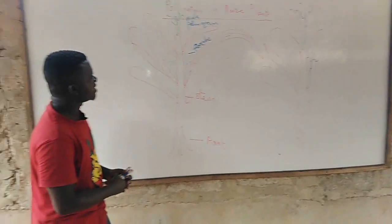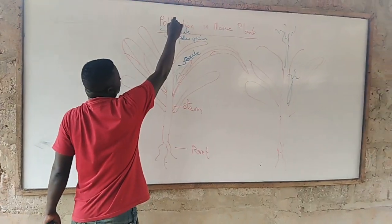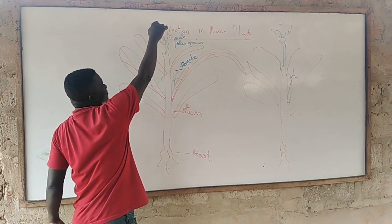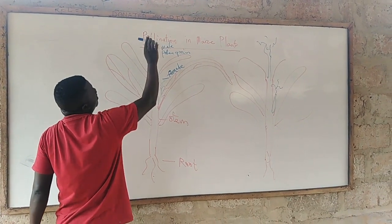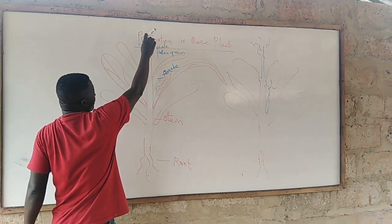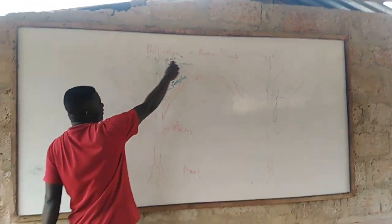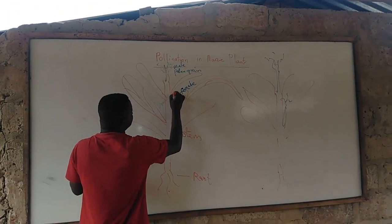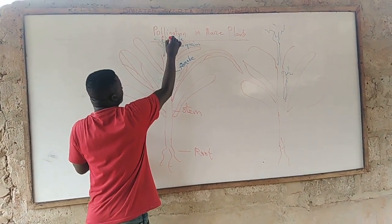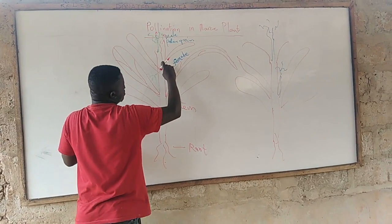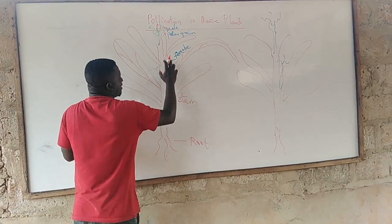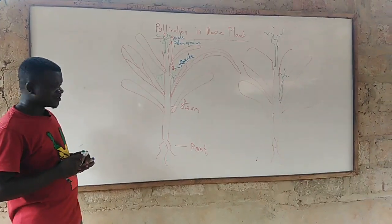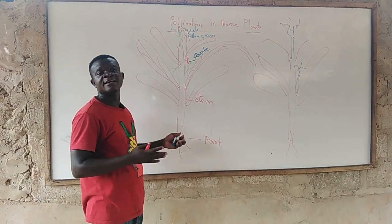Natural pollination occurs when the pollen is transferred from the male part to the female. Insects sit on the male flower because it contains petals and nutrients; they feed on it and the powdery substance sticks to their skin. They then move and sit on the female part, depositing the pollen. When that happens, fertilization takes place and that leads to the formation of fruit. This is natural pollination in maize.